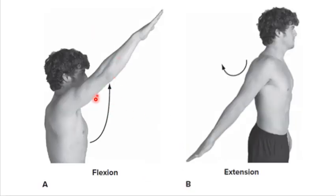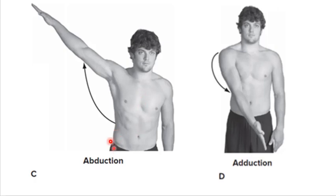Shoulder flexion is the arm coming forward over your head like you're asking a question, then extension coming back down and reaching behind you. You have abduction in the frontal plane — the arm coming away from midline — and adduction, the arm coming towards midline.